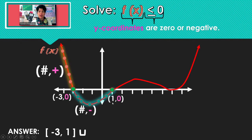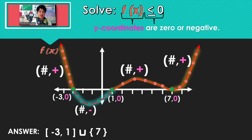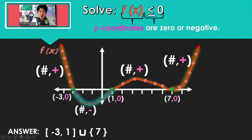We continue looking — all along there the y-coordinates are positive. We get right there, and the y-coordinate is 0, and afterwards the y-coordinates are also positive. Notice the notation: we are only using the number 7.